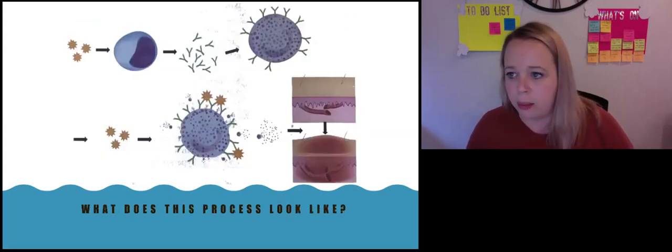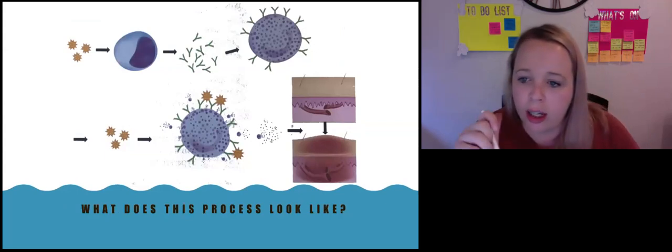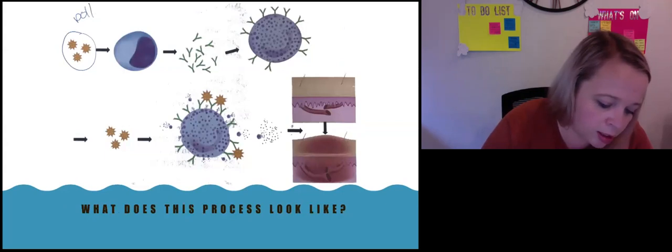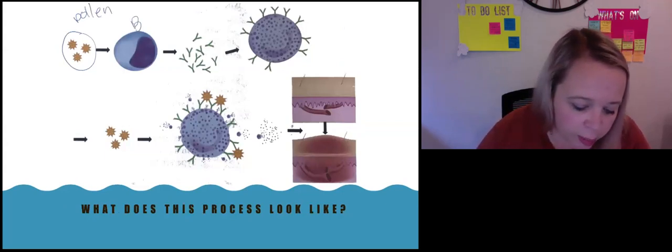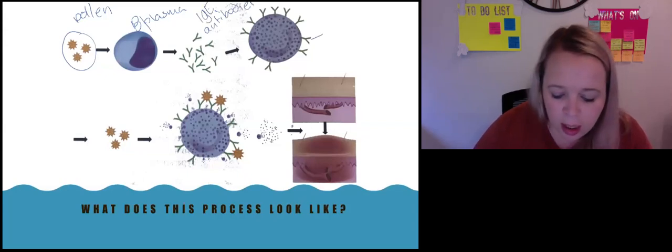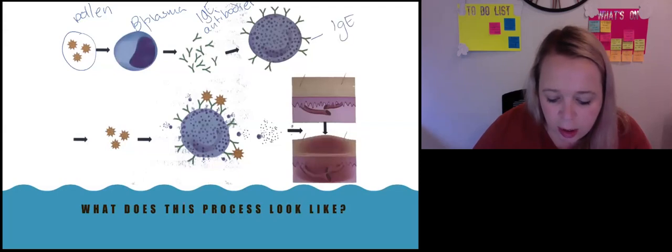Here's another picture showing you what it looks like. I'm pretty sure this is on the same page. You've got here, you can label it. You can see here are your pollen antigens. They activate a B plasma cell to produce antibodies. If you want to, you can call them IgE antibodies. Antibodies bind to the mast cells.